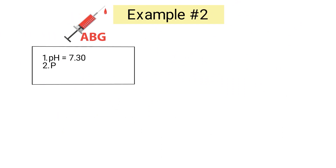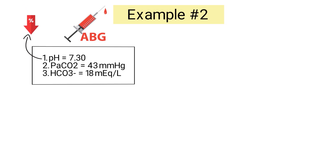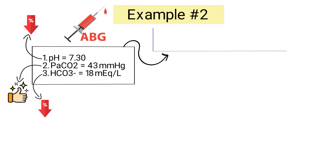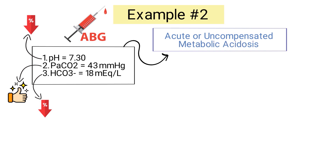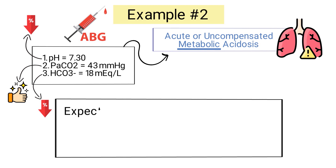In the second example, a patient has the following ABG results: pH of 7.3, PaCO2 of 43, and bicarb of 18. The pH is decreased and outside the normal range; the PaCO2 is normal while the bicarb is decreased. This ABG can be interpreted as acute or uncompensated metabolic acidosis — the patient has a metabolic issue but the lungs have not yet had a chance to compensate.